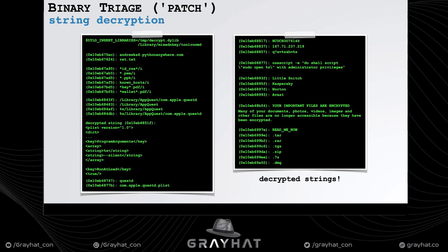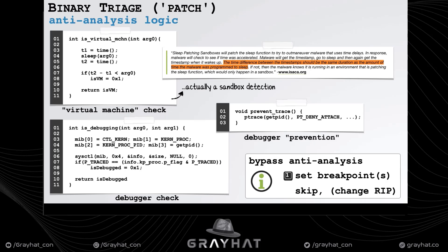During initial triage we also encounter various anti-analysis logic — fairly common in malware. We see a method named isVirtualMachine that attempts to detect if the malware is running in a sandbox, a function named isDebugging, and another called preventTrace which seeks to prevent successful debugging. The good news is it's very easy to bypass all of these — we can simply set a breakpoint on them in a debugger, and when they're about to execute, change the instruction pointer to skip over them so the anti-analysis logic never runs.